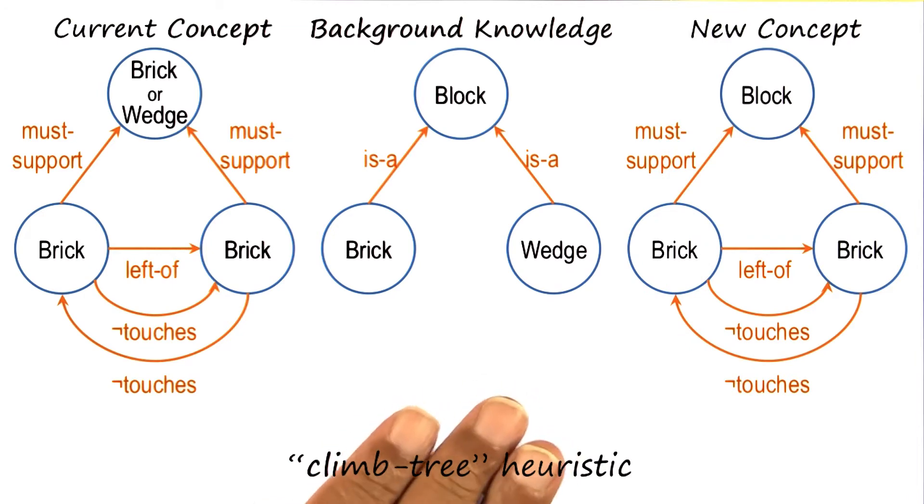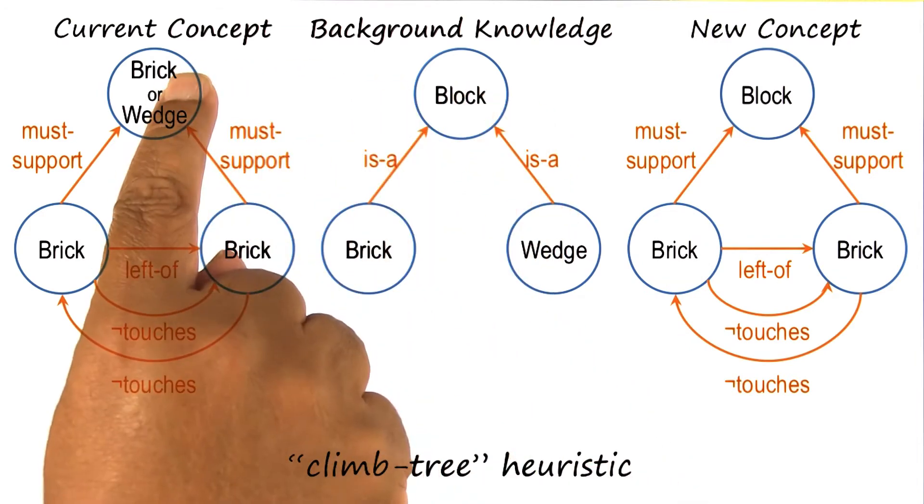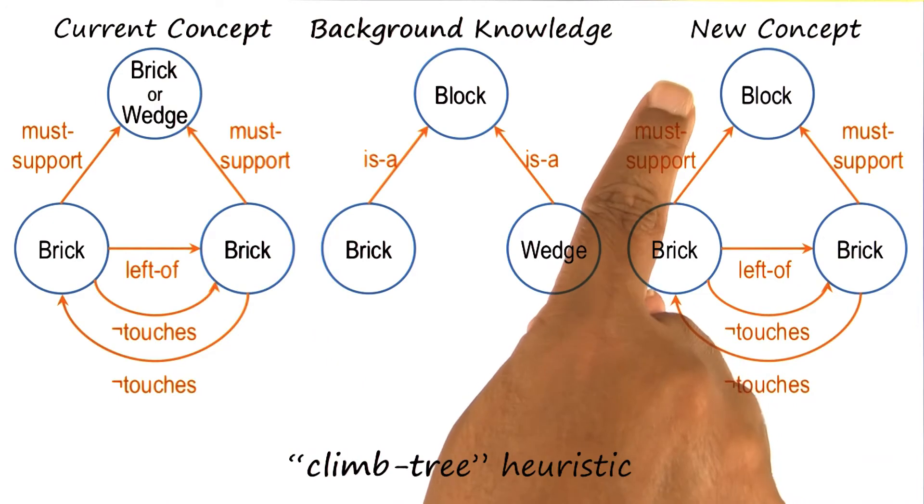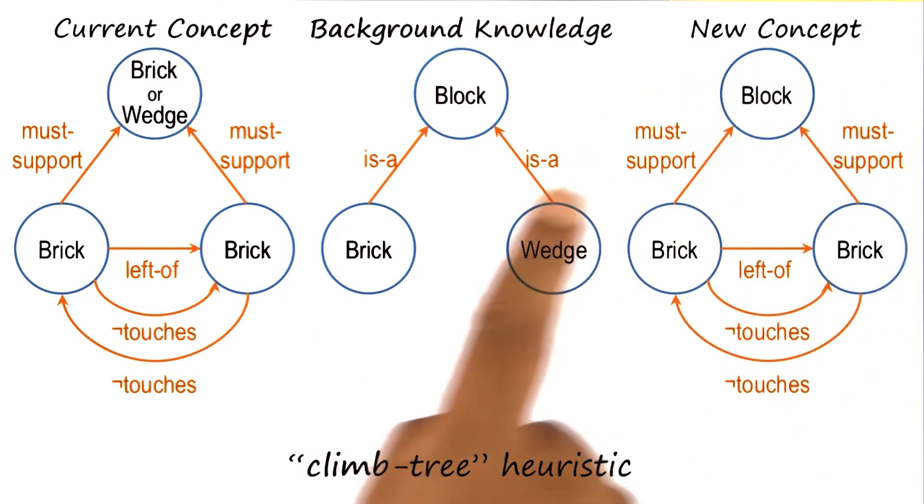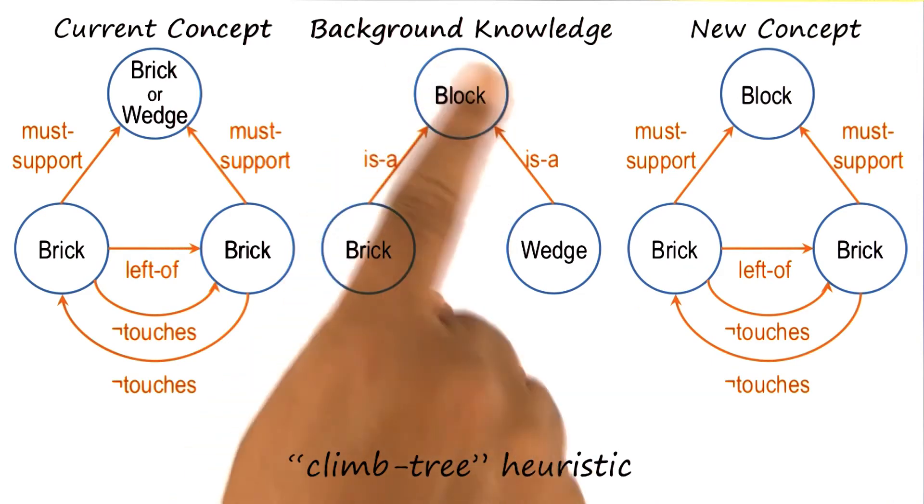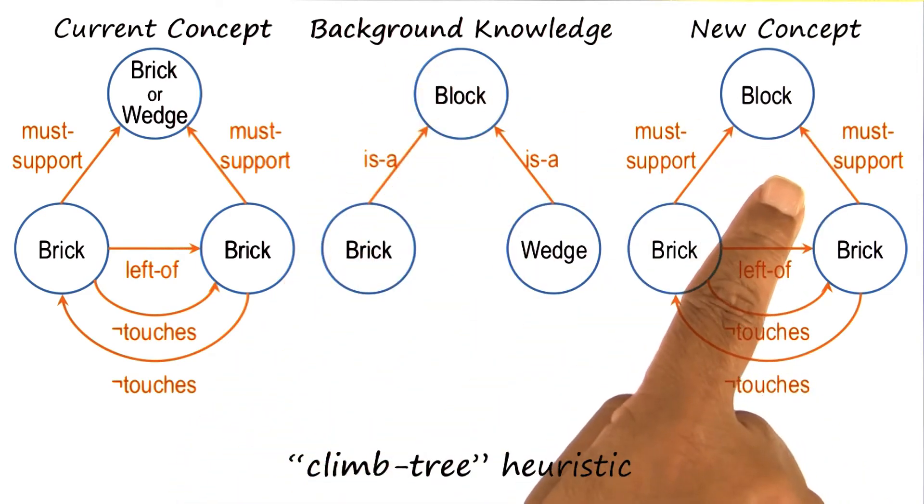If a new example comes along and it has a cylinder at the top here, that would be covered by this particular concept. And this AI programmer would be able to recognize that particular instance, which had a cylinder at the top, as an example of this concept definition.